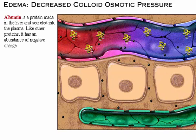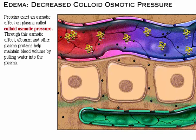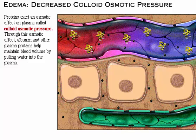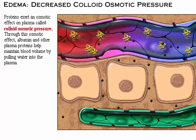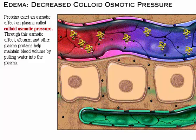Albumin is a protein made in the liver and secreted into the plasma. Like other proteins, it has an abundance of negative charge. Proteins exert an osmotic effect on plasma, which is called colloid osmotic pressure. Through this osmotic effect, albumin and other plasma proteins help maintain blood volume by pulling water into the plasma.